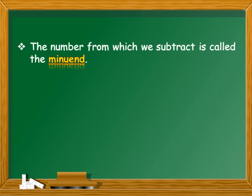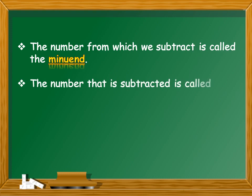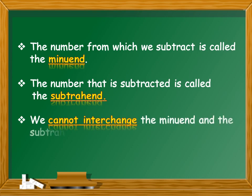Before I end this video, let us quickly revise the terms of subtraction once more. The number from which we subtract is called the minuend, which is always the greater number. The number that is subtracted is called the subtrahend, which is the smaller number, and we cannot interchange the minuend and the subtrahend.